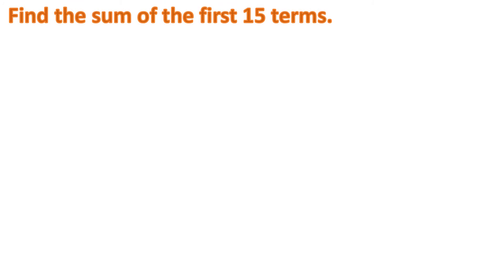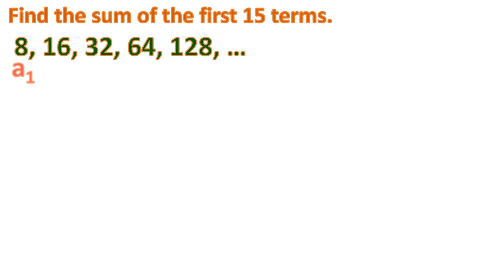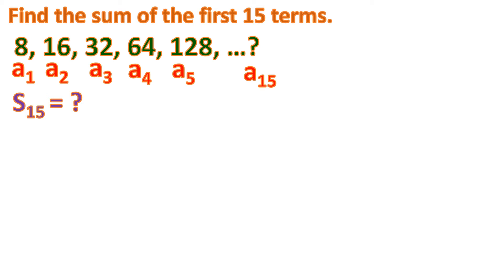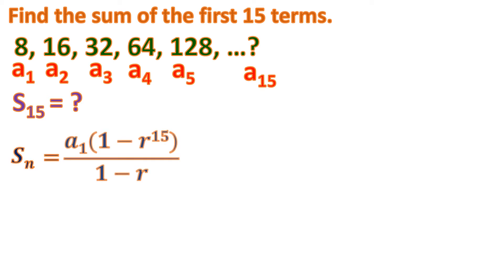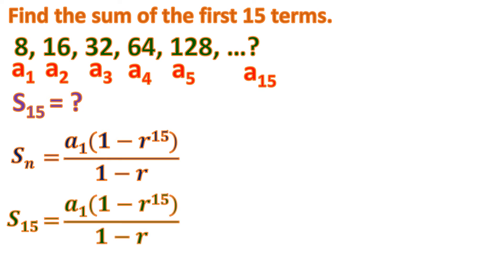Let's go back to the problem of finding the sum of the first 15 terms. The last term is not needed — you only need the first term, the common ratio, and n, the number of terms. So let's substitute: n equals 15.